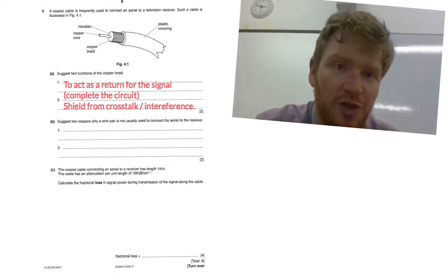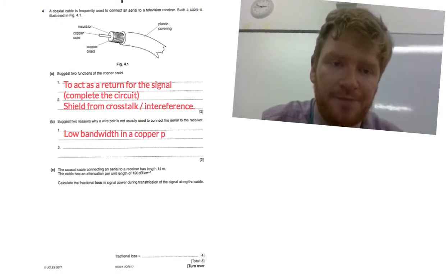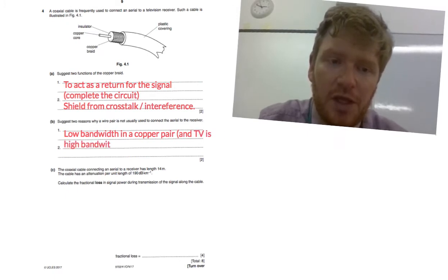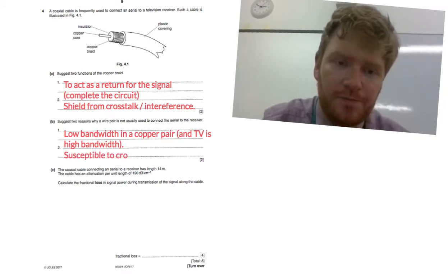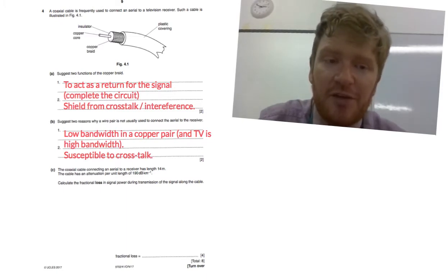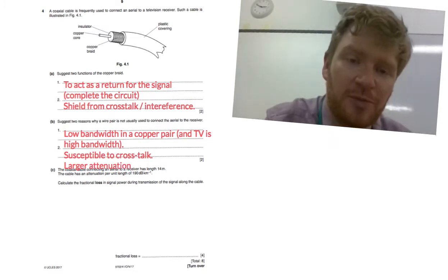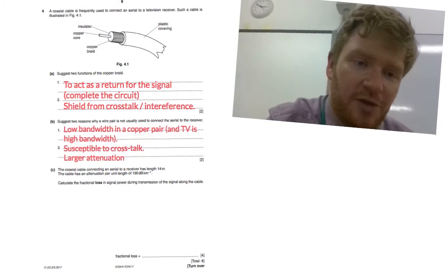Suggest two reasons why a wire pair is not usually used to connect an aerial to a receiver. So remember the properties of wire pairs. Wire pairs have low bandwidth in a copper pair, and TV is typically quite a high bandwidth application. The other main reason is they're susceptible to cross talk. You could also say that they have a larger attenuation.